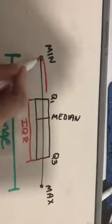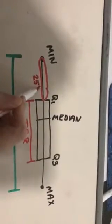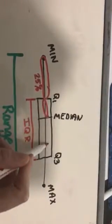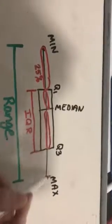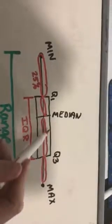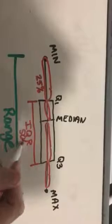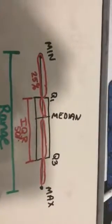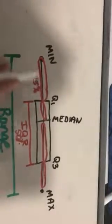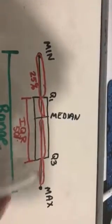This portion of the data is 25% of the data points. This portion is 25%, this portion is 25%, and this portion is 25%, which means the interquartile range represents 50% of the data and then the lower 25% is what we call a whisker on the left hand side and the upper 25% is what we call a whisker on the right hand side.